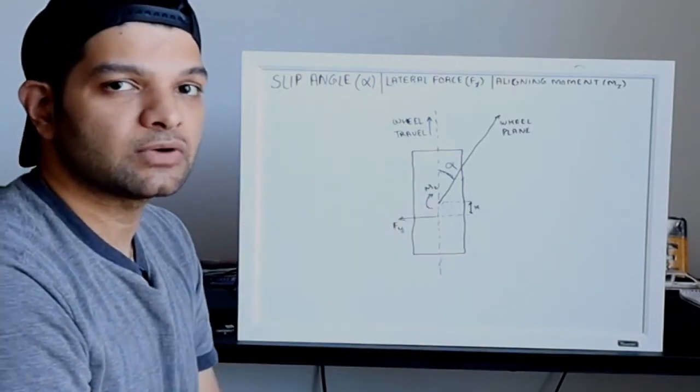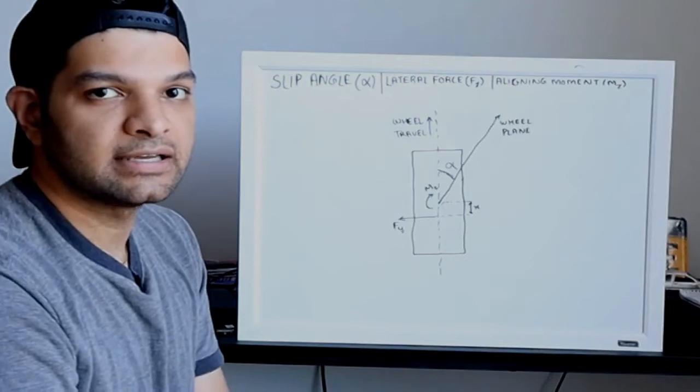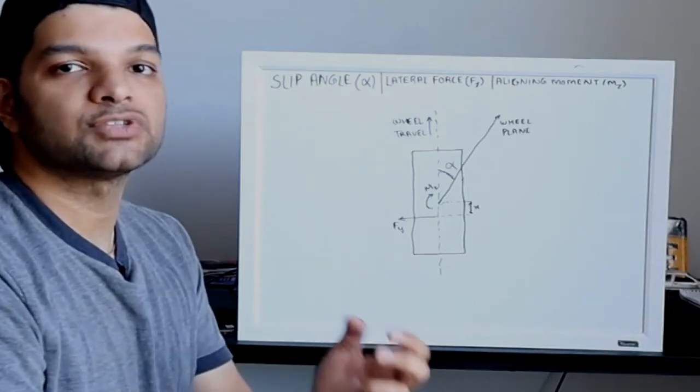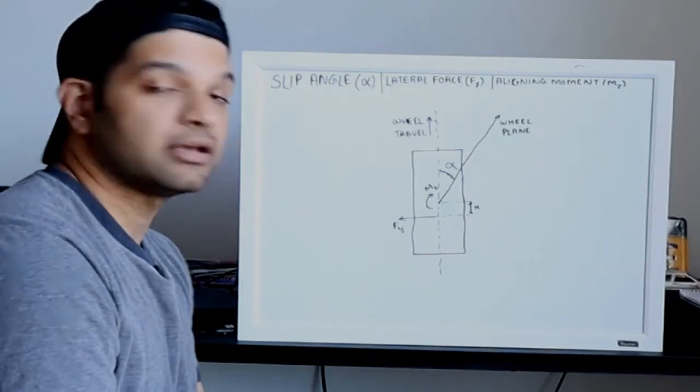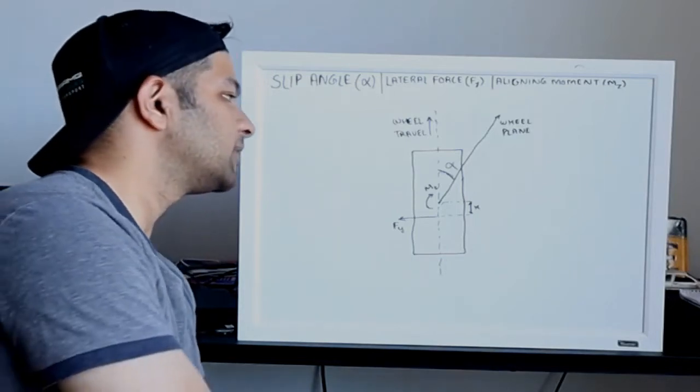The angle between direction of travel and direction of heading is known as slip angle. The tire is actually slipping in the lateral direction and it's denoted by the sign of alpha.